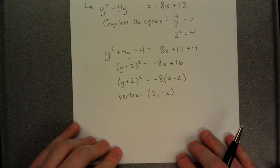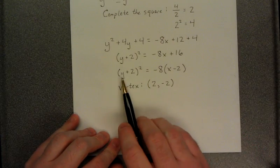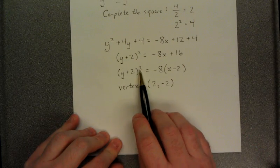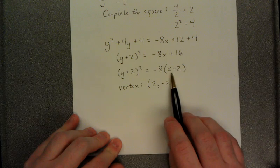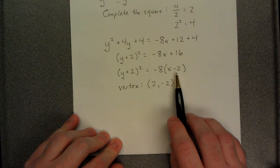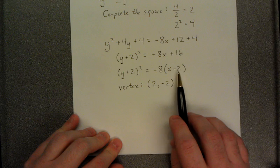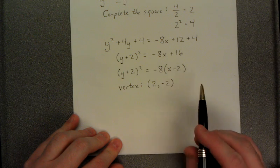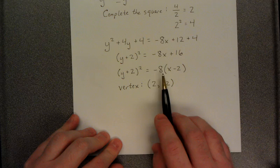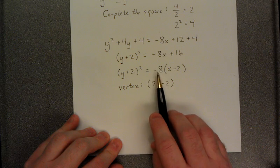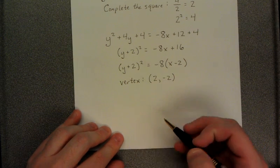In addition, we see that because the y terms were the ones that were squared and the x term is to the first power, our parabola opens up horizontally. It'll either open to the left or to the right, depending on the coefficient of x. Because the coefficient is negative, it'll open to the left.